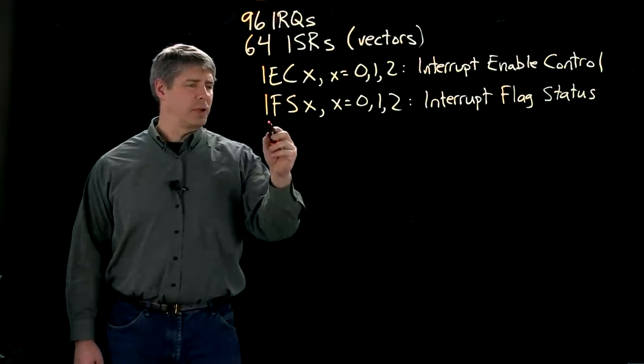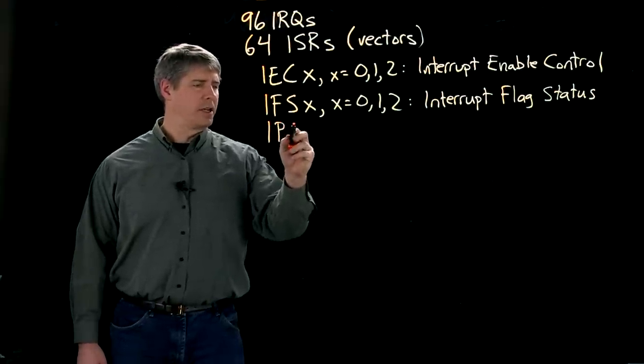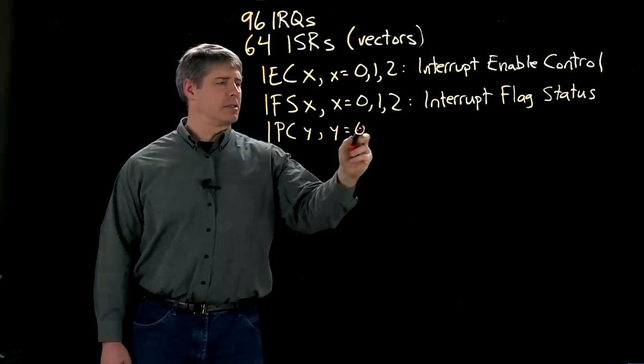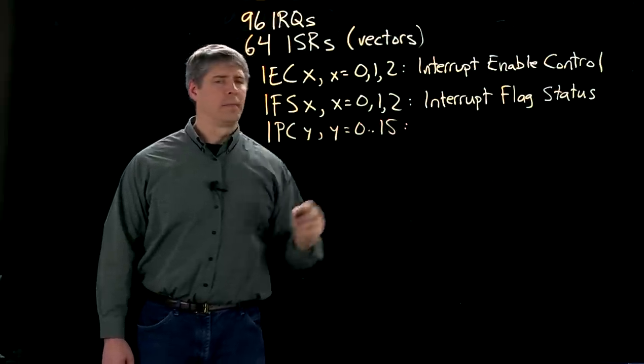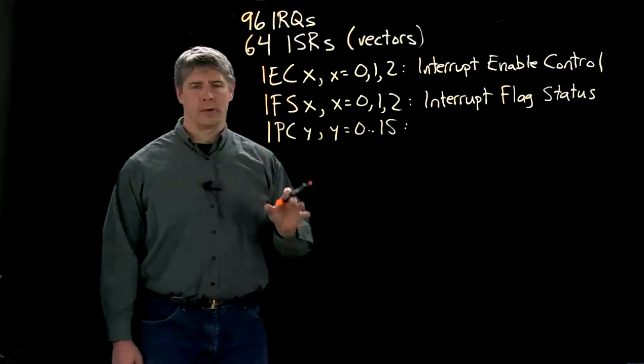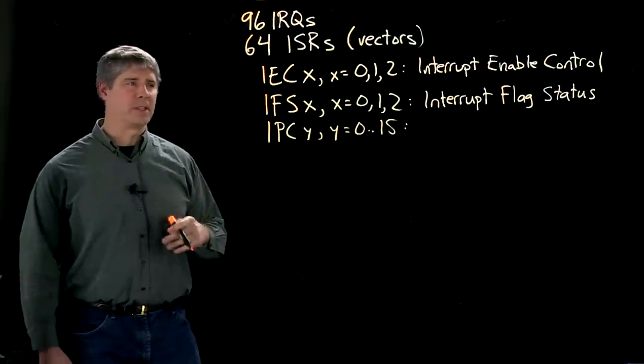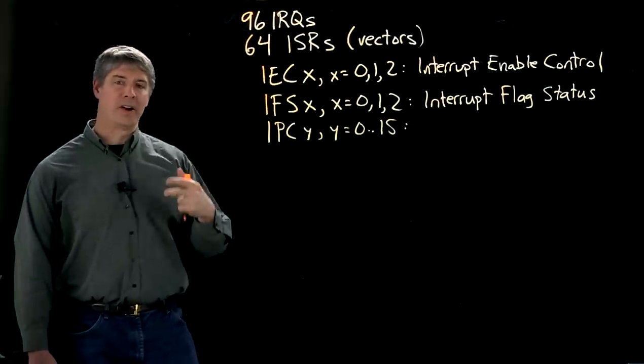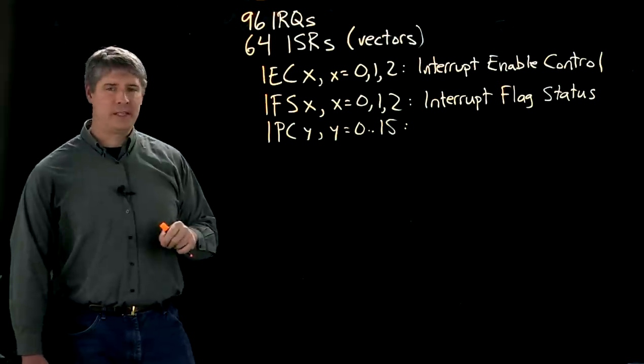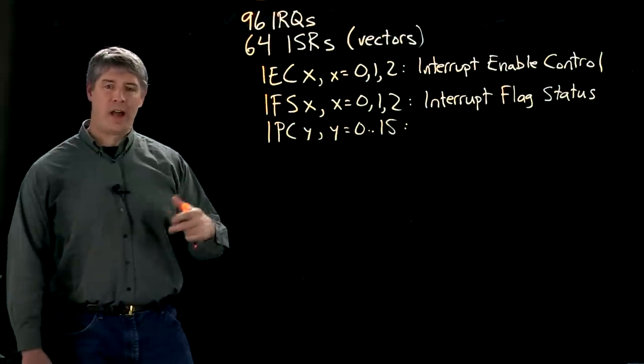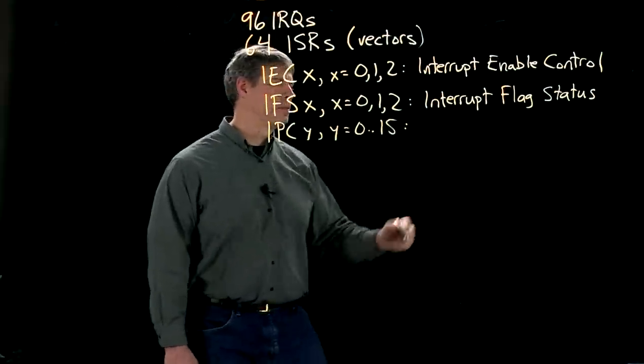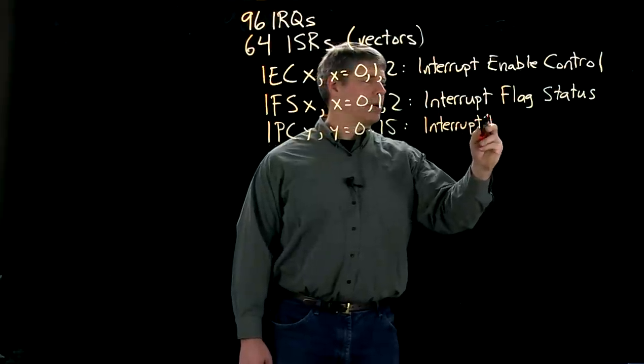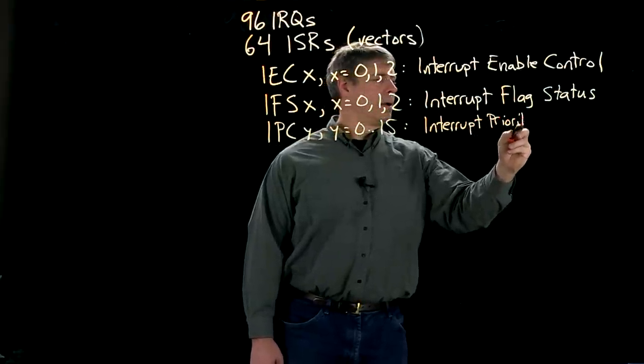And the last set of registers we have are the interrupt priority control registers, IPC Y, where Y is equal to zero to fifteen. And these hold the priority of the various interrupt service routines. So whereas these two sets of registers have one bit per IRQ, the IPC registers have five bits per ISR, per vector. So interrupt priority control.